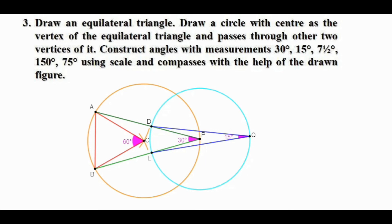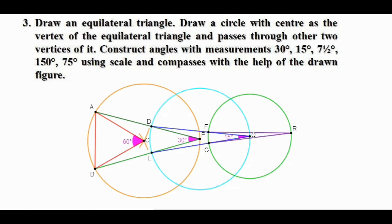Now we have to make an angle of 7.5°. Since 7.5 is half of 15, we need to draw a circle with central angle 15°. Take Q as the center and draw a circle, then mark the points of intersection F and G. Consider arc FG — angle Q is the central angle of FG. Mark a point R on the alternate arc of FG and join F to R and G to R. Angle R is 7.5° because the central angle of arc FG is 15°.